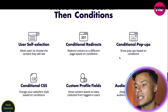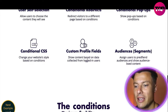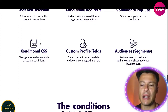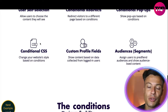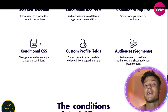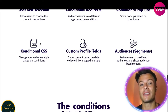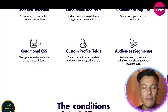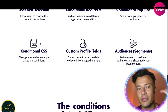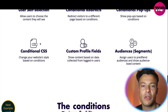There are conditional redirects, so you can redirect customers to different pages based on their conditions. There are also conditional pop-ups and conditional CSS, so you can change your website style based on where someone is coming from. For example, if it's the Fourth of July and your website runs in multiple countries, you could show US visitors something themed for Independence Day, while UK visitors just see the standard page.